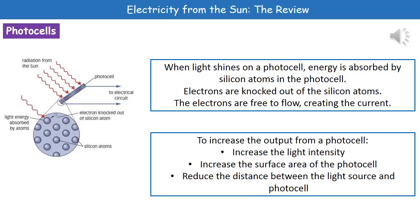Or we can reduce the distance between the light source and the photocell. Now obviously some of those are easier to do than others when thinking about photocells using the sun's energy. So increasing the surface area is probably the easiest one to do, but the others are possible when thinking about photocells that rely on artificial light sources.